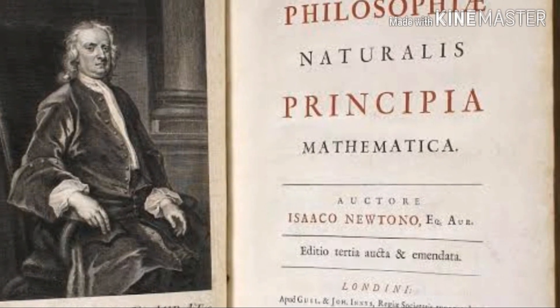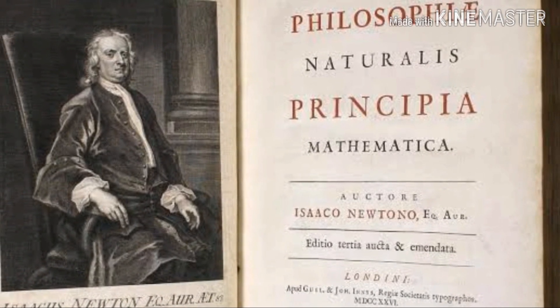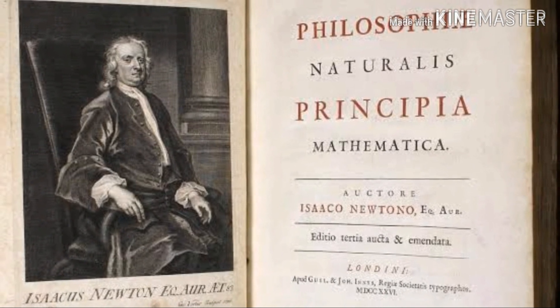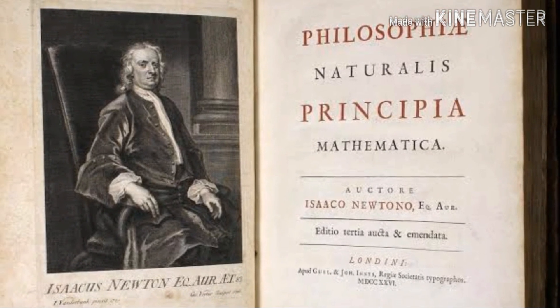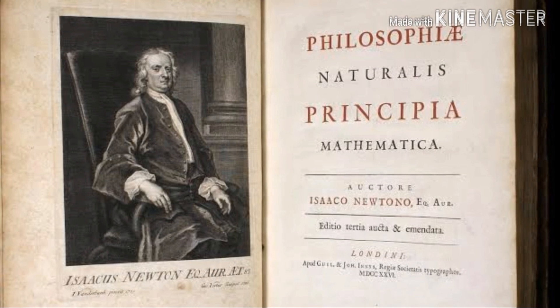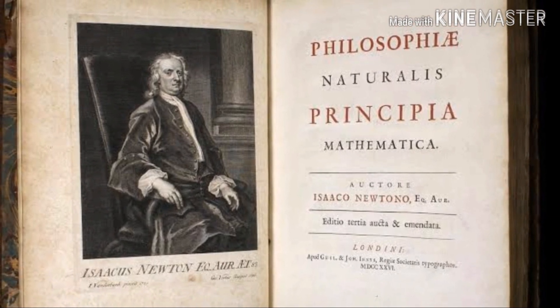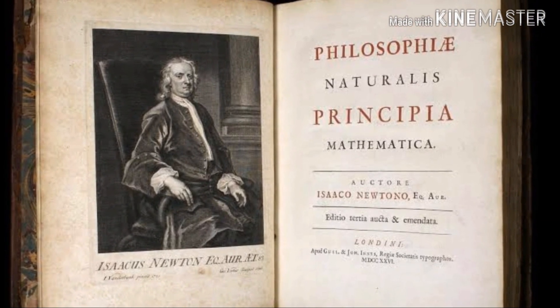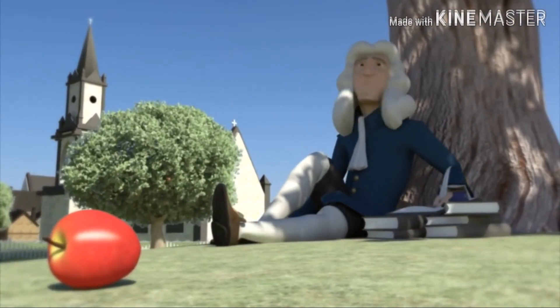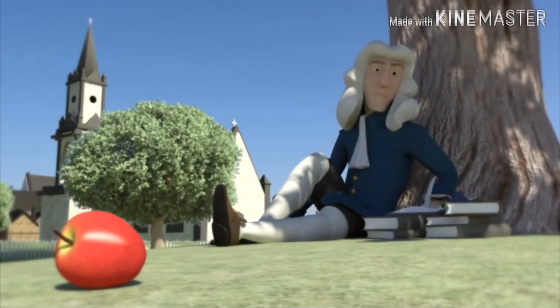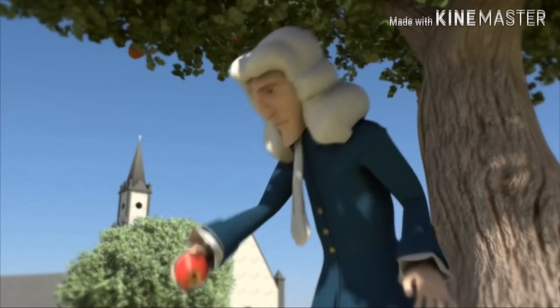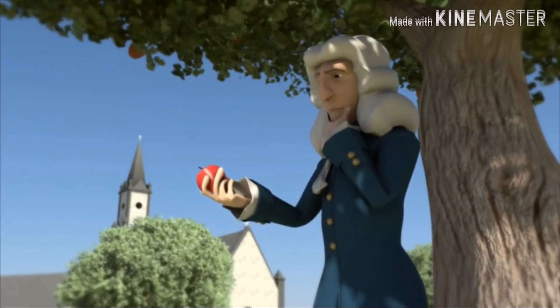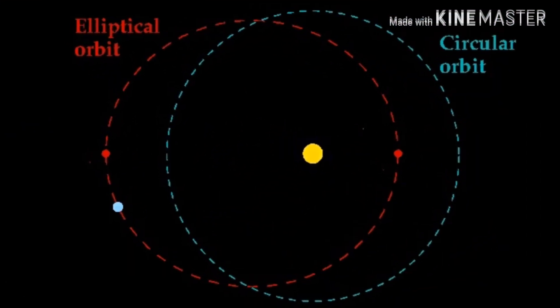In 1687, Sir Isaac Newton published a book, 'Philosophiæ Naturalis Principia Mathematica,' in which he explained space-time and the complex mathematics needed for explaining motion. He also gave the Universal Law of Gravitation. The story that an apple fell on his head giving him the idea of gravity is almost false — he was just thinking about why an apple always falls down. Newton showed that due to gravity, planets revolve in elliptical paths instead of circular ones.